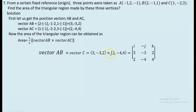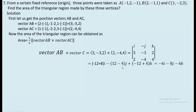Components of AB are (3, -3, 2) and components of AC are (2, -4, 4). Computing the cross product AB × AC, we evaluate each component using the determinant method.